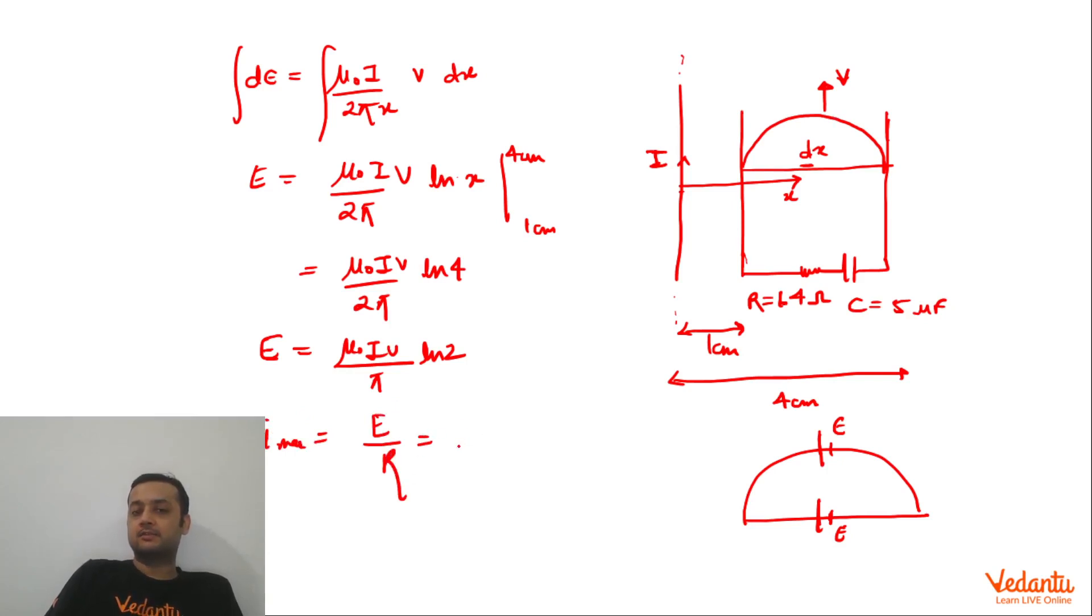Correct. So that is mu0 I V ln 2 upon pi into R. So even if V was changing then also I max will not change, I max will be same. That means we can find the value of I max whether we take velocity to be changing with time or velocity to be constant.